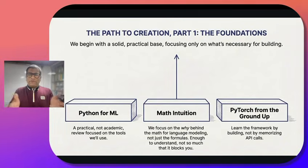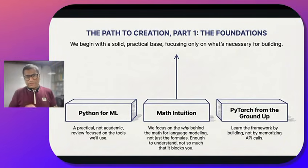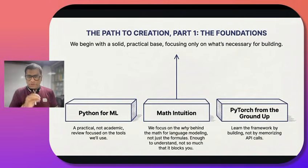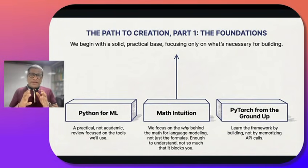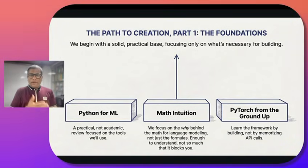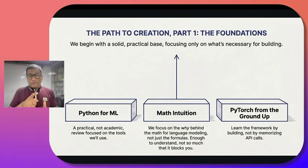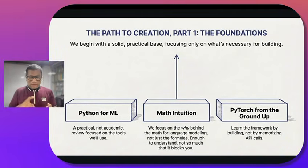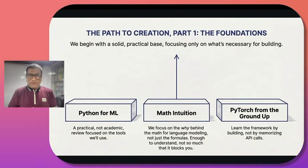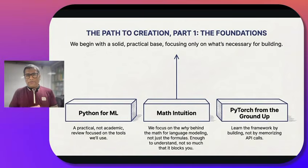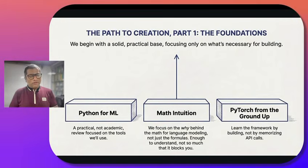This course is divided into four different parts. In the first part, we will be focusing on the foundation. We will start with the Python that is required later for PyTorch. Then we will cover a very important point: math intuition. The entire LLM is not magic — it is just math plus design. You need to understand the math behind it to understand why and how exactly the LLM works. We will understand vectors, matrices, their calculations, similarity, embeddings, dot products, and more. Once you understand that, we will move to the framework we will be using: PyTorch. In this entire course, we will be using only PyTorch — nothing else. Only PyTorch is more than sufficient for us to build our LLM from scratch.